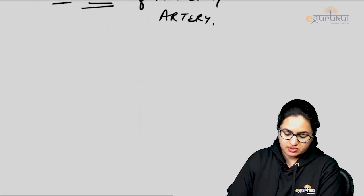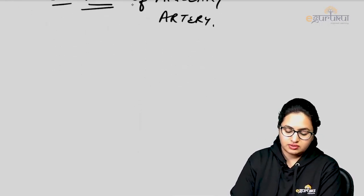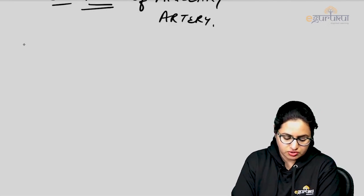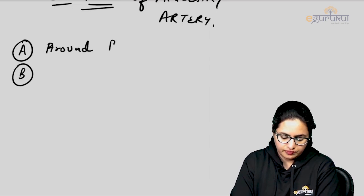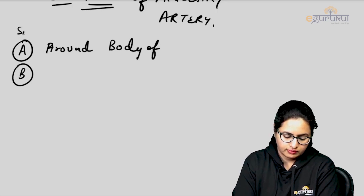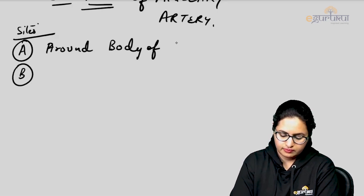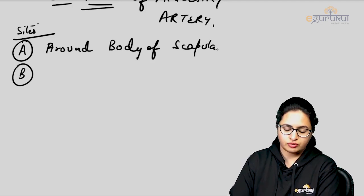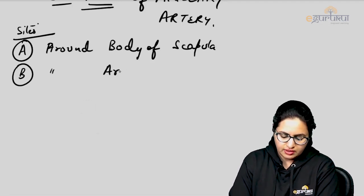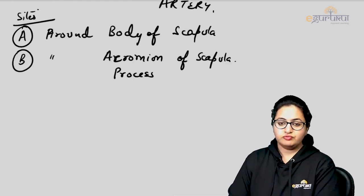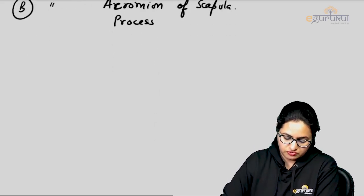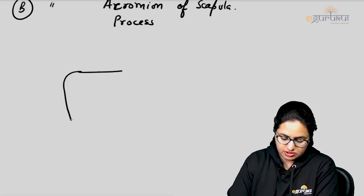Now, the arteries participating in this scapular anastomosis — there are two sites of anastomosis: one is around the body of the scapula, and the other is around the acromion process of the scapula. We will explain it with the help of a schematic diagram.